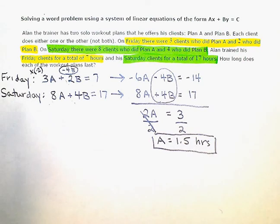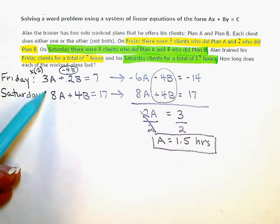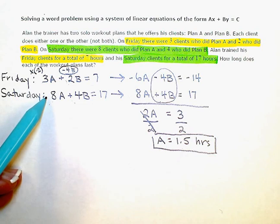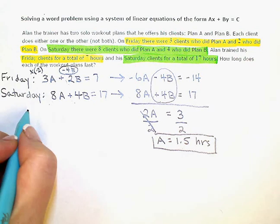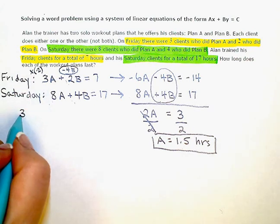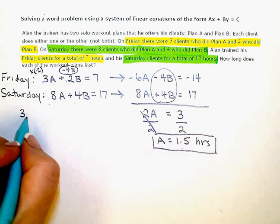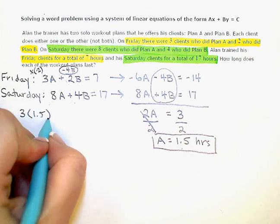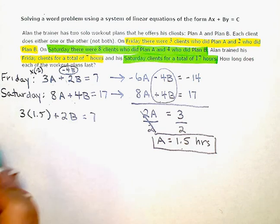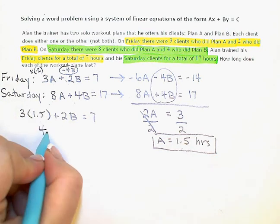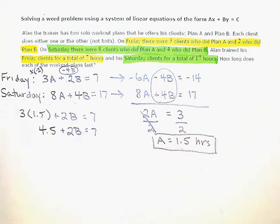Now that I know how long the A workout takes, I can use this number, go back to either one of my original equations, substitute 1.5 in for A and figure out what B is. So I'm going to use the top equation. I have 3 times A, or I'm going to substitute in 1.5, plus 2B equals 7. And then solving for B.